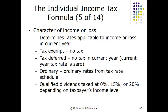You also have to consider the character of income or loss, because its character determines whether it's taxed and at what rate. Most individuals receive ordinary income through employment or self-employment, which is taxed at ordinary rates from the tax rate schedule. Two other character types are qualified dividends, taxed at preferential rates of 0%, 15%, or 20% depending on the taxpayer's income level — 0% for taxpayers in the 15% or below bracket, 15% for mid-range, and 20% for higher-income individuals.